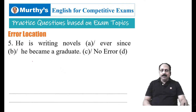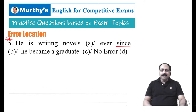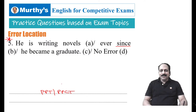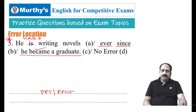Question five — error location: He is writing novels ever since he became a graduate. When you see 'since' or 'ever since,' you should think of two tenses — present perfect tense or present perfect continuous. Ever since usually goes with present perfect or present perfect continuous. 'He is writing' is present continuous — not correct. It should be 'He has been writing novels ever since he became a graduate.' The clause after 'ever since' should be in the past tense — 'he became a graduate' — nothing wrong there.